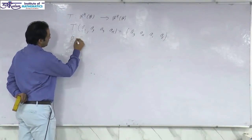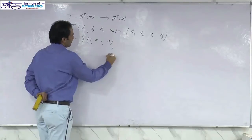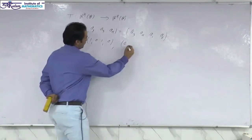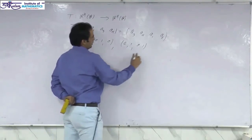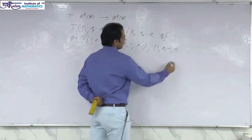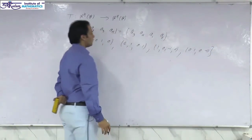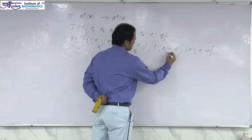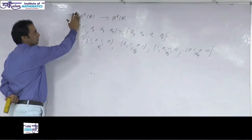We can define a basis beta consisting of the vectors: x₁ = (1, 0, 1, 0), x₂ = (0, 1, 0, 1), x₃ = (1, 0, -1, 0), and x₄ = (0, 1, 0, -1). These are the four vectors of the basis. You can easily check that beta is a basis of R⁴. Now, what is the matrix representation of T with respect to beta?